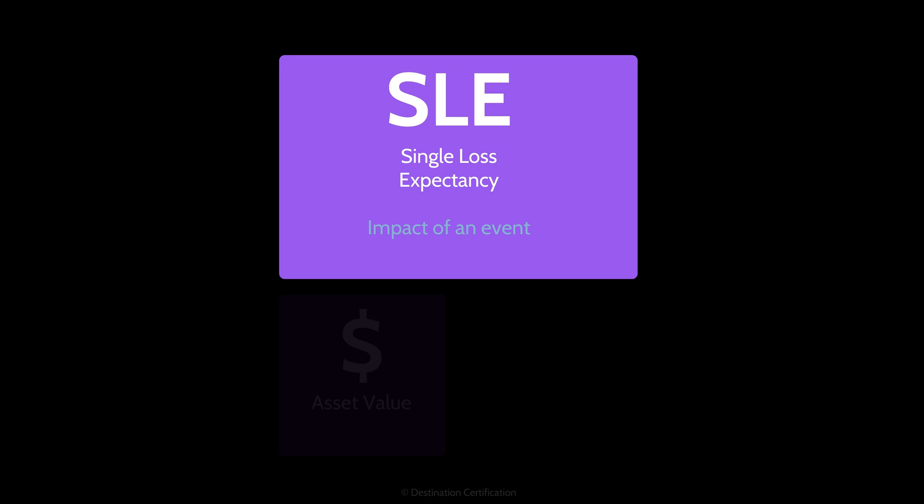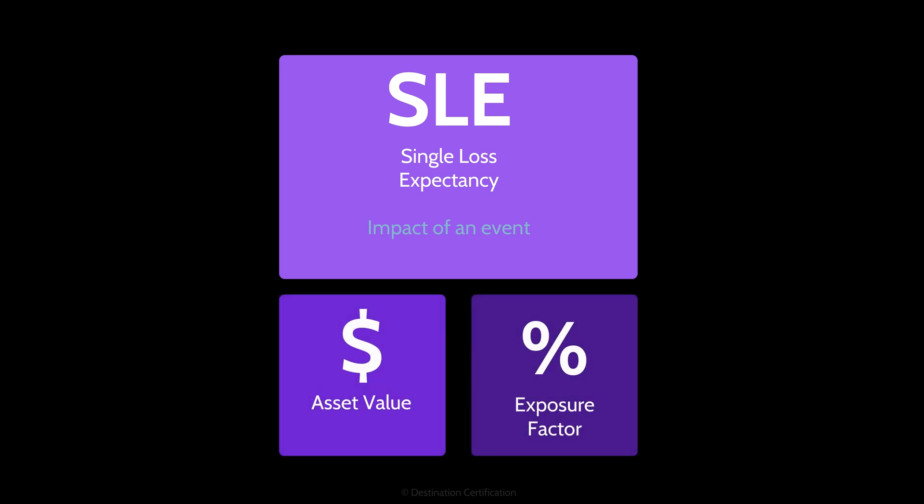To calculate ALE, you first need to calculate the SLE — the Single Loss Expectancy — which is simply how much a risk is going to cost the organization if it occurs. To calculate SLE, you need the asset value and the exposure factor. The asset value is what the asset is worth, and the exposure factor is a percentage representing what percent of the asset you expect to lose if the risk occurs. An exposure factor of 10% means you expect to lose 10% of the asset; 100% means you expect to lose all of the asset. Simply multiply the asset value by the exposure factor to get the SLE.